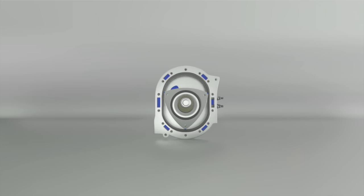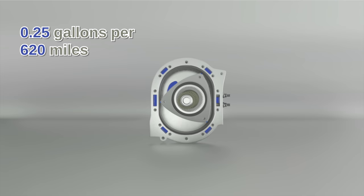As far as oil is concerned, consumption of a rotary engine can be about 0.25 gallons per 620 miles. The gas mileage isn't ideal either. You'll only be able to drive 12 miles on a gallon.